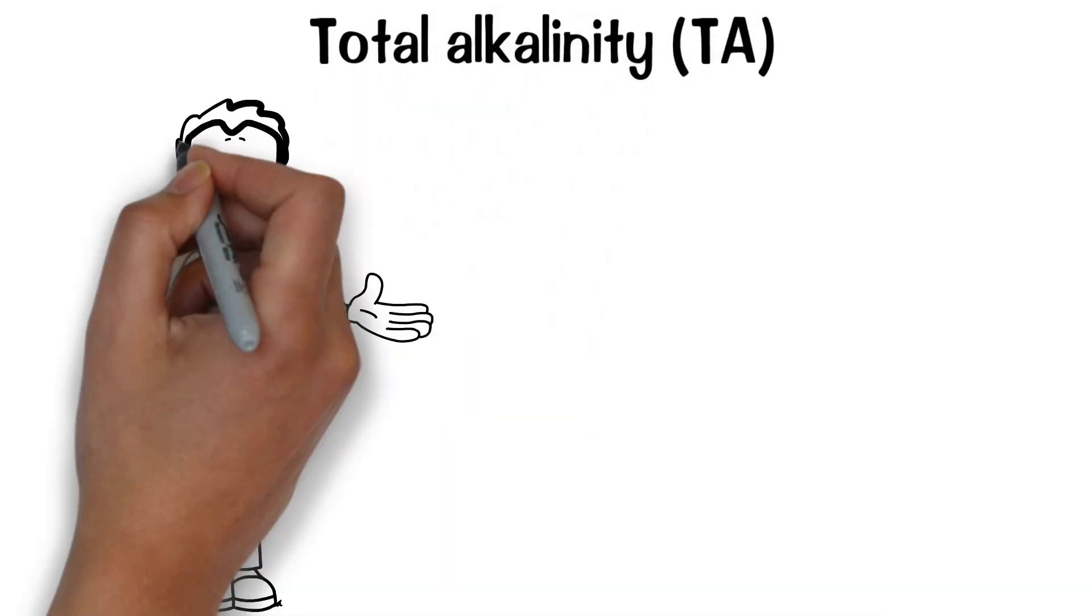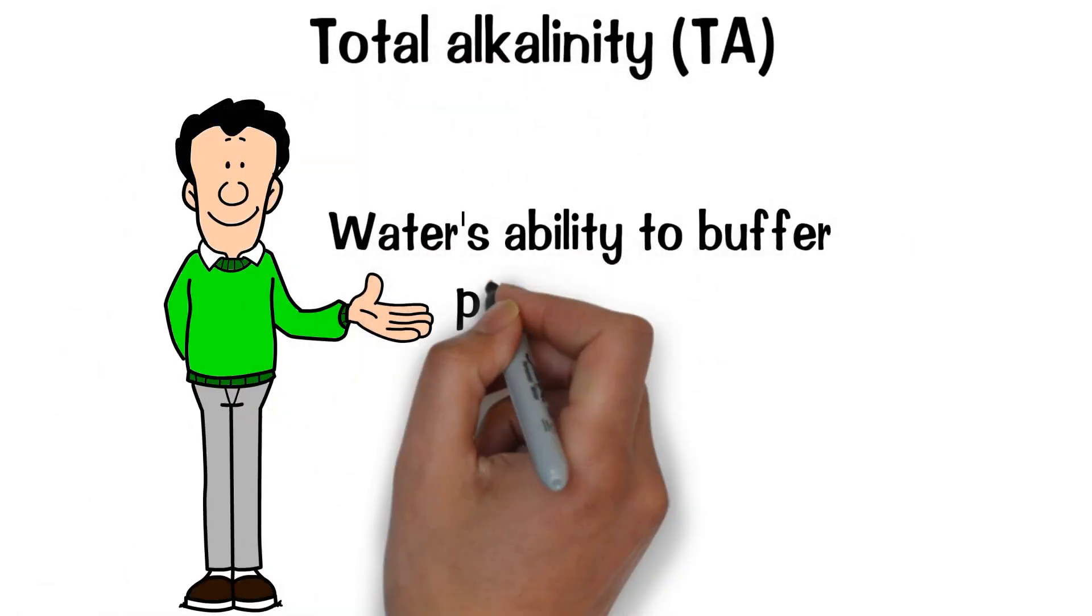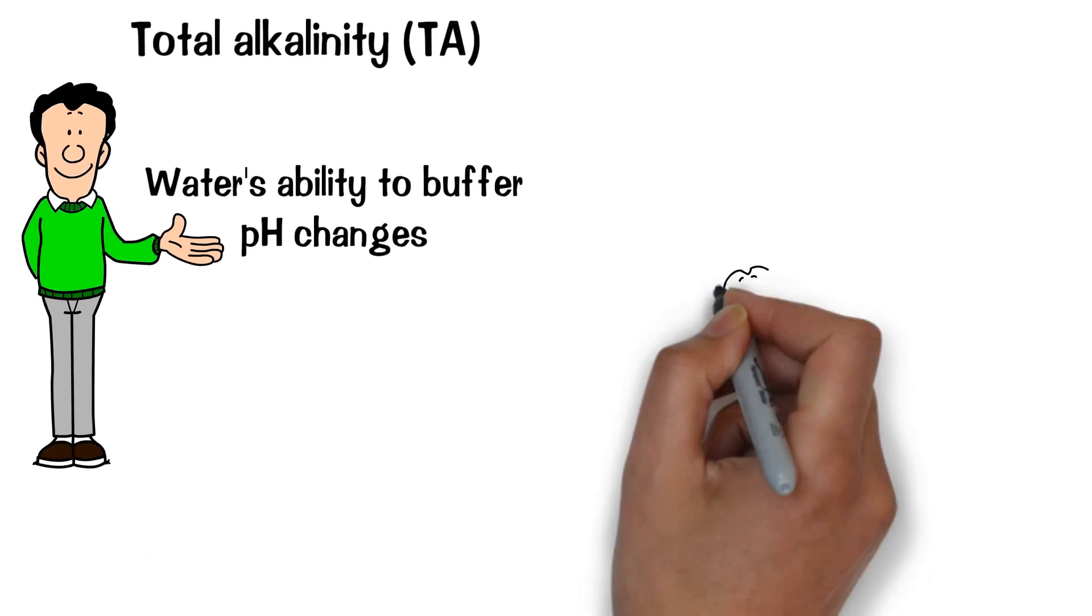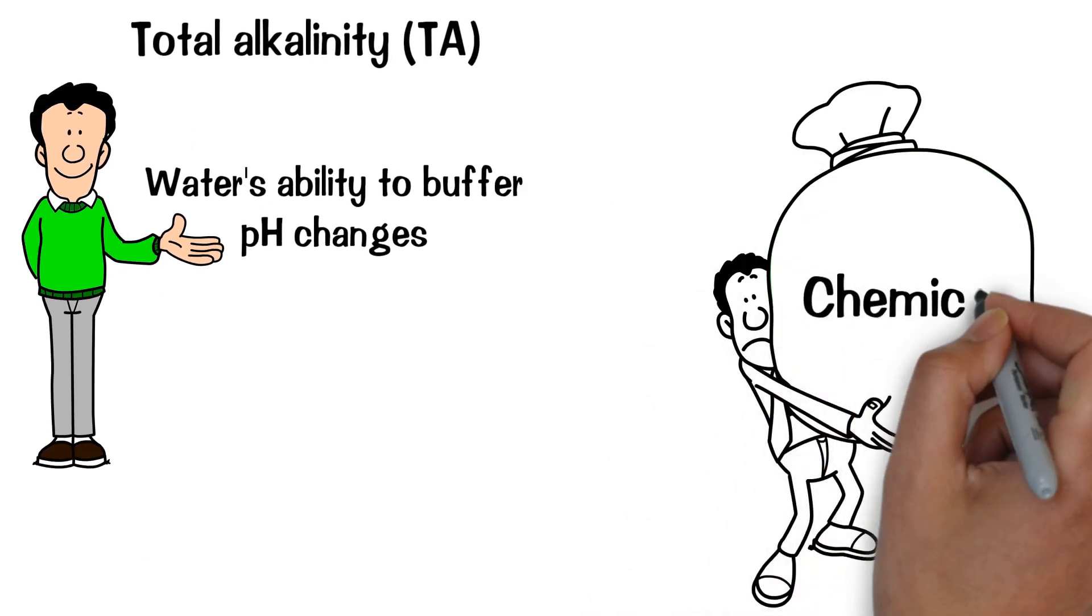Total alkalinity (TA) indicates the water's ability to buffer pH changes. Buffering means you need to use a larger quantity of chemical to change the pH.